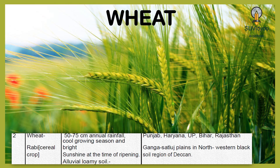Wheat is the second staple crop of India. It is a Rabi crop. It requires 50–75 cm of annual rainfall, a cool growing season and bright sunshine at the time of ripening. It grows well on alluvial loamy soil. It is grown mainly in the states of Punjab, Haryana, UP, Bihar and Rajasthan. The areas of production of wheat are the Ganga-Sutlej plains in the north and the western black soil region of Deccan.